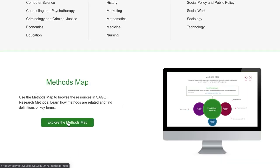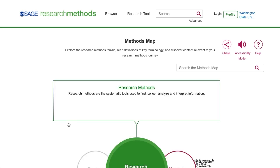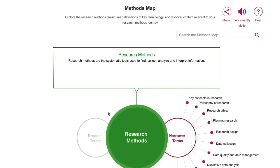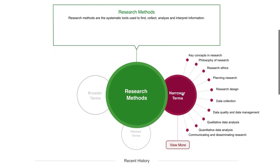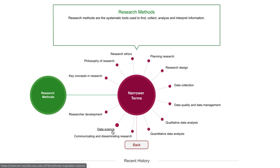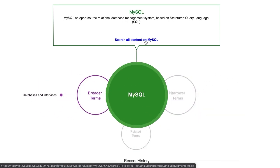We'll click this button to explore the methods map. You may have noticed when we did our original search that the top result above that book chapter was actually a link to the methods map. What this is, essentially, is a list of subjects that are used in the database. You can use this tool to interact with these different subjects, navigate between broader, narrower, and related terms, and also search for each subject term once you have navigated to it.